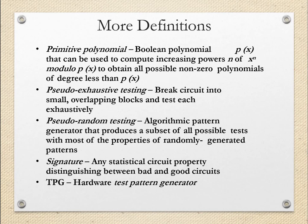The next important term is signature: any statistical circuit property distinguishing between bad and good circuits. It may be a set of digital bits. It is compared with the actual response of the circuit, and then a decision regarding whether the circuit is bad or good can be made. TPG is the hardware test pattern generator.